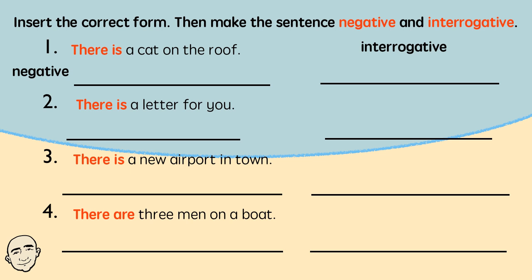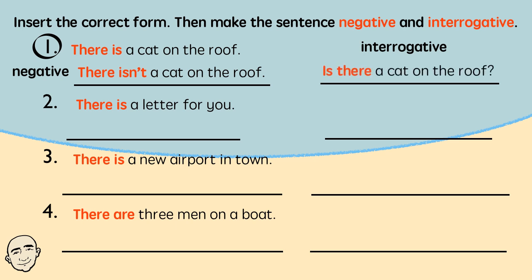Insert the correct form. Then make the sentence negative and interrogative. There is a cat on the roof. Negative: There isn't a cat on the roof. Interrogative: Is there a cat on the roof?